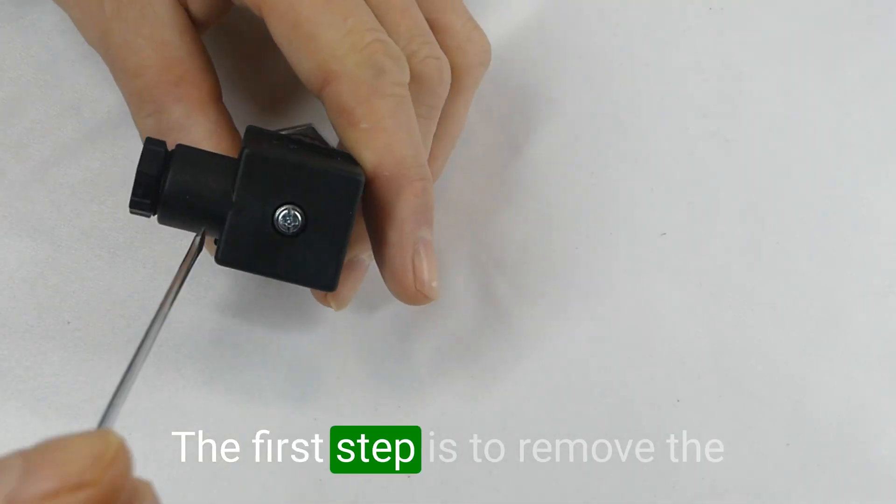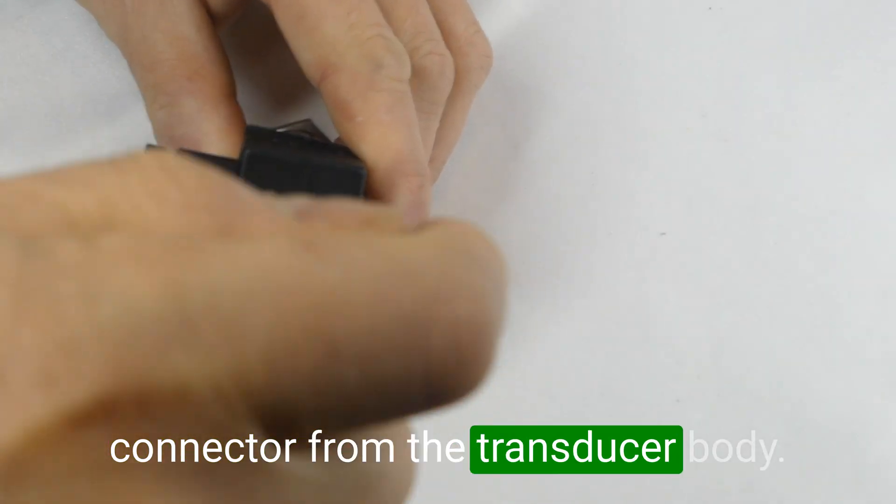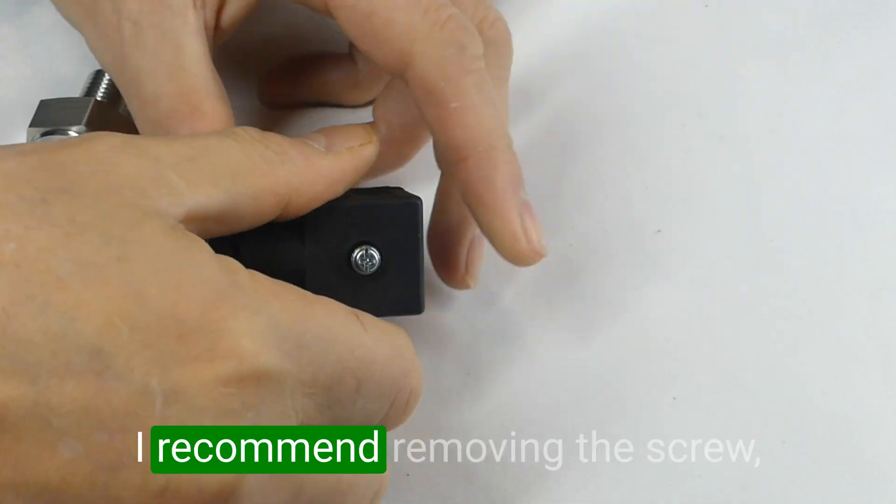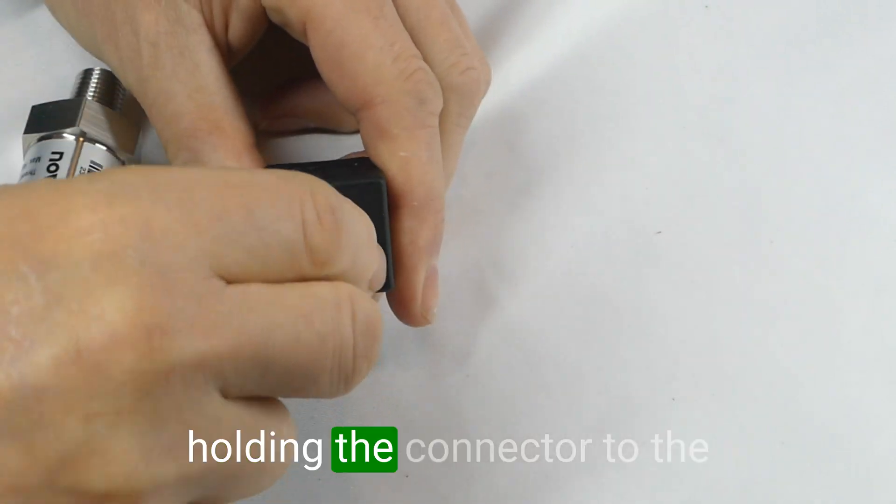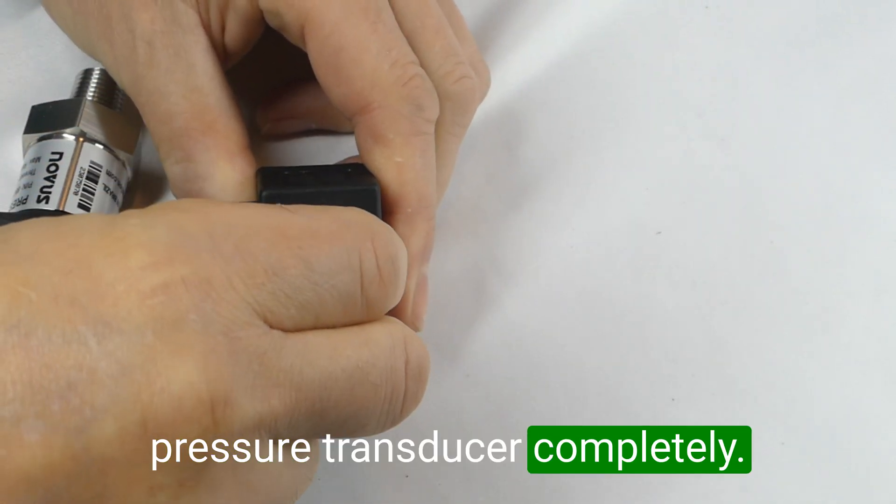The first step is to remove the connector from the transducer body. I recommend removing the screw holding the connector to the pressure transducer completely.